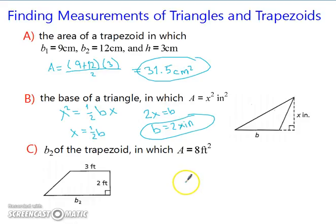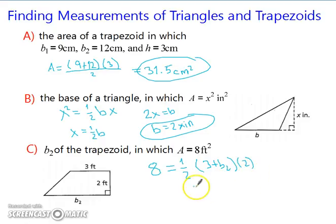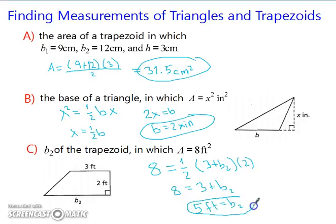Let's look at the third one. We're trying to find b2 of a trapezoid where the area is 8 feet squared. So 8 equals one-half times the quantity 3 plus b2 times the height, which is 2. Since one-half and 2 cancel each other out, we're left with 8 equals 3 plus b2. Subtracting 3 from both sides, we get b2 equals 5 feet.